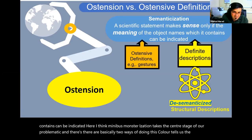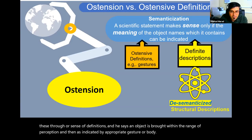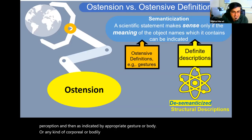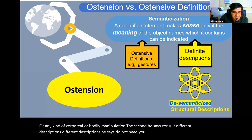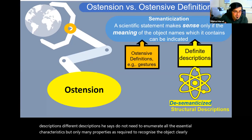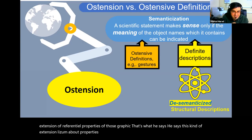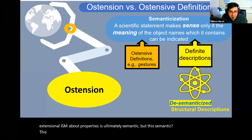The first of these is through ostensive definitions. An object is brought within the range of perception and then indicated by appropriate gesture, bodily maneuvering, or corporeal manipulation. The second way is through definite descriptions. Descriptions do not need to enumerate all the essential characteristics, but only as many properties as required to recognize the object clearly — as extensional or referential properties. This kind of extensionalism about properties is ultimately semantic, but this semantic aim should ultimately be disemanticized.